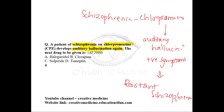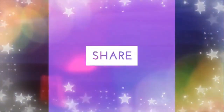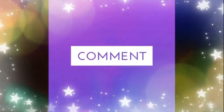If the patient has developed resistant schizophrenia, the drug of choice for resistant schizophrenia is clozapine. So clozapine is the next drug to be given in this situation. Thank you and thank you for watching.